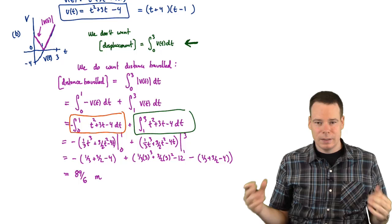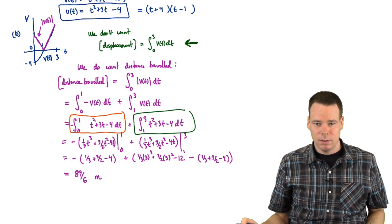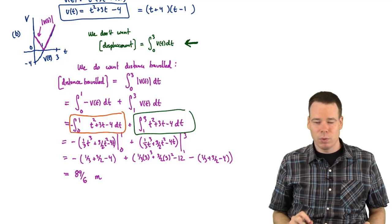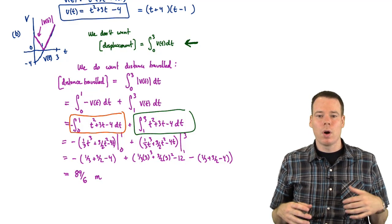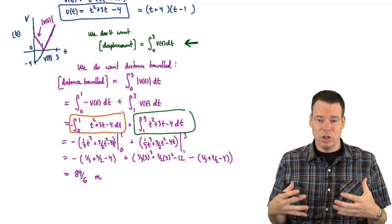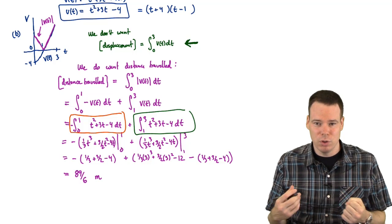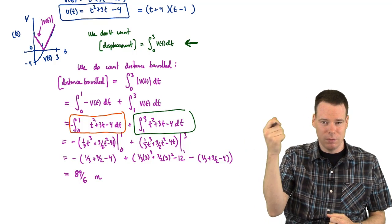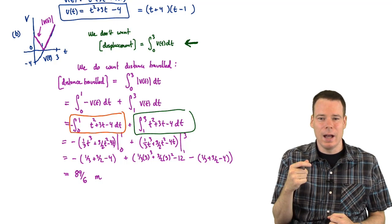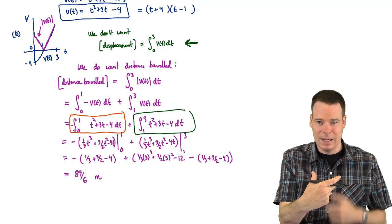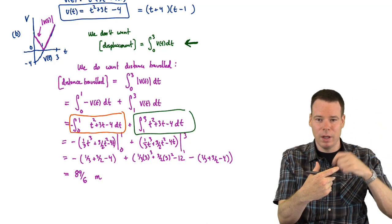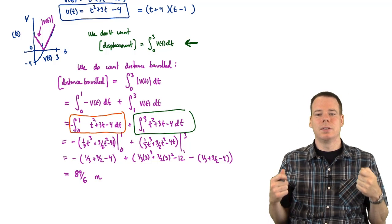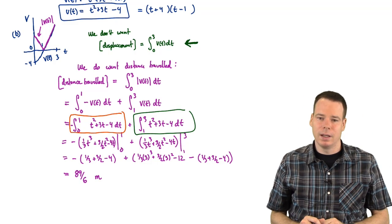That's it for these examples on the net change theorem and this lecture on the indefinite integral. Next lecture we're going to look at the substitution rule — an integration technique that essentially undoes the chain rule. From differential calculus we learned the chain rule to differentiate compositions of functions; now we'll learn how to reverse it to find the anti-derivative.